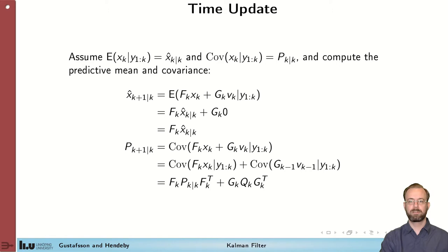We'll start to derive the Kalman filter by looking at the time update step. The first thing to notice is that an affine transformation of a Gaussian variable is still a Gaussian variable. Hence, we only have to look at the mean and the covariance before and after the update step. We assume that you have the mean of the distribution before the update, so the mean of the state at time k given all the measurements that we received up until time k is x hat k given k, and the matching covariance matrix P k given k.